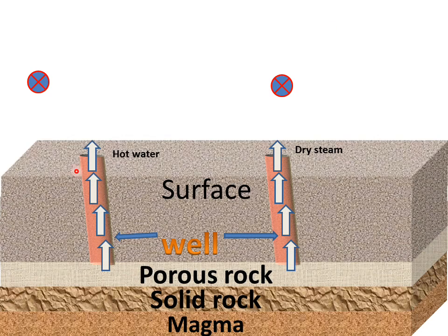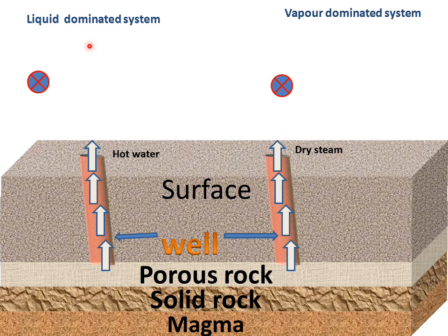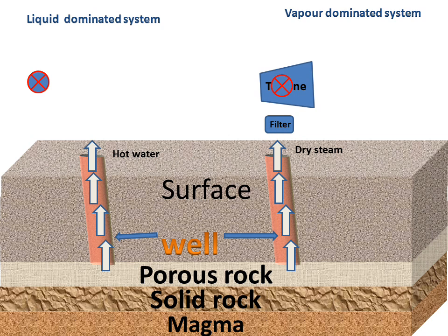We have the surface with a well drilled down to the porous rock. This is a vapor-dominated system in which we use dry steam. This is a liquid-dominated system in which we use hot water or a mixture of steam and hot water. In the vapor-dominated system, there will be a filter for filtering the dry steam — impurities and any metal particles will be filtered at this step. Then there will be a turbine, and this filtered steam will reach the turbine for rotating it.